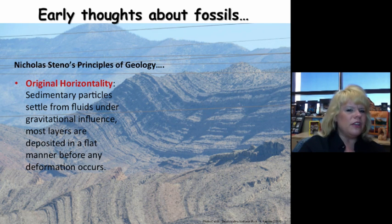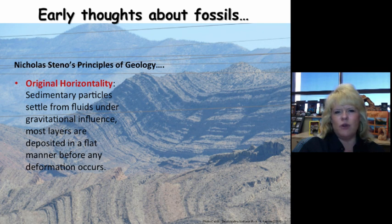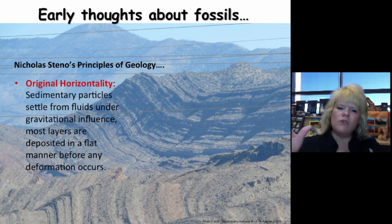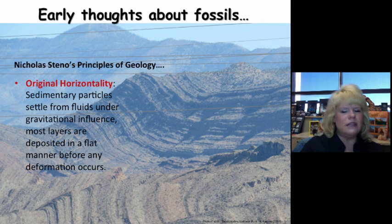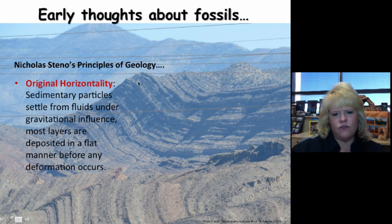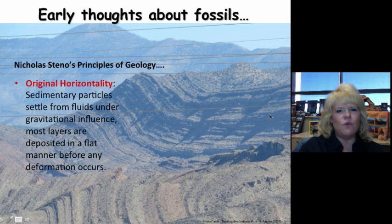Steno also came up with the Law of Original Horizontality. Breaking that apart — it means the layers were originally flat. Sedimentary rock layers typically settle out from fluids or wind in a flat manner by gravitational influence, deposited in a flat, systematic manner before any deformation occurs. Looking at Death Valley here, you can see the folding that's happened in those rock layers — they are sedimentary rock layers, but they were deformed after they were made. That was a big observation for Steno.